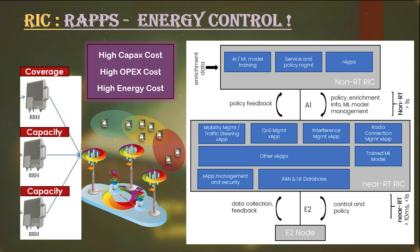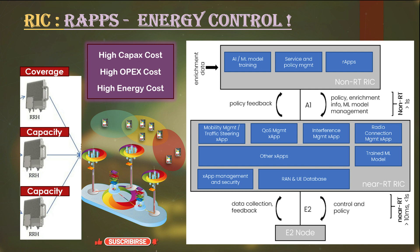Now let's talk about another application in Non-Real-Time RIC. The concept of Near Real-Time and Non-Real-Time RIC was introduced in Open RAN to develop more efficient network systems at different stages, providing flexibility to deploy applications based on their functionalities. Telecom infrastructure is one of the highest investment systems — the RAN part contributes around 70% of CapEx cost. In network operations, RAN accounts for around 60% of overall OpEx, which includes nearly 30% for energy — the power and electricity required to run RAN devices, data centers, and core networks.